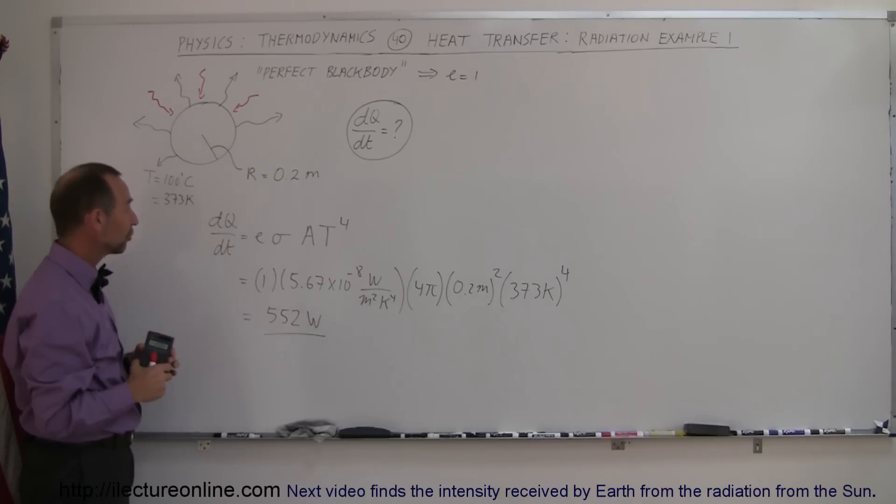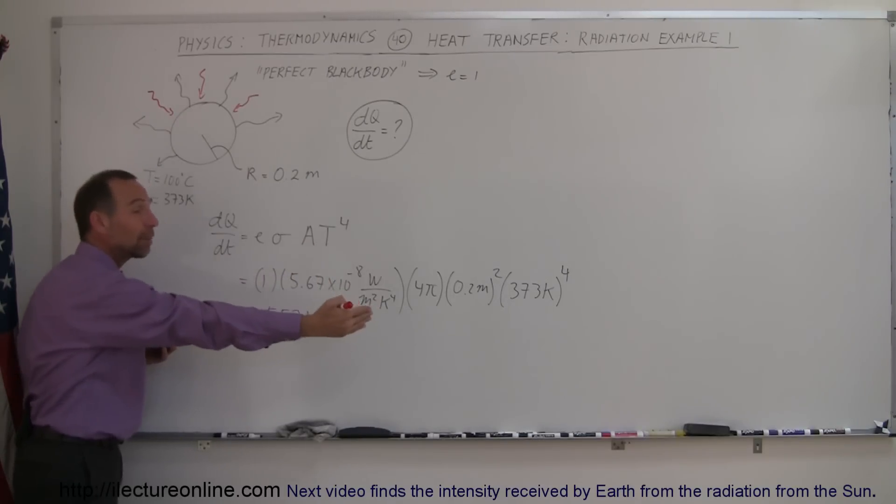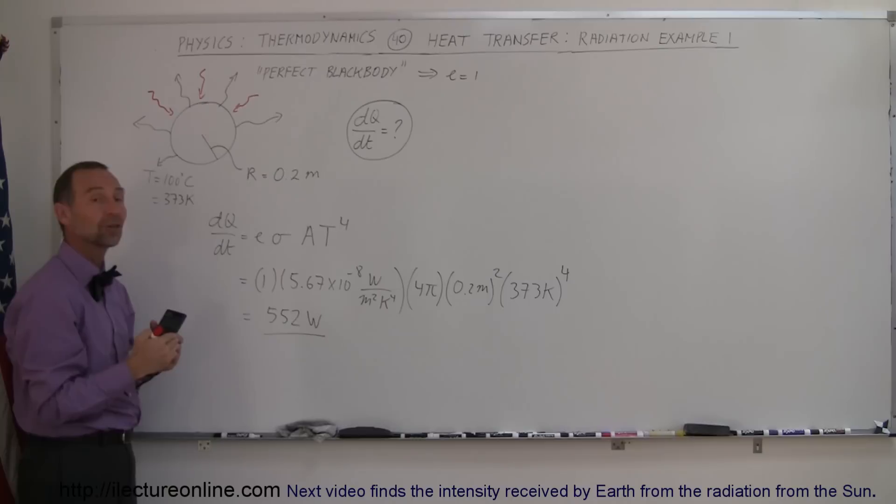So in some future examples, we'll show you the dQ/dt net, meaning it will be the amount of heat being radiated out minus the amount of heat being transferred back into the object from the outside environment. We'll see that in some future example.